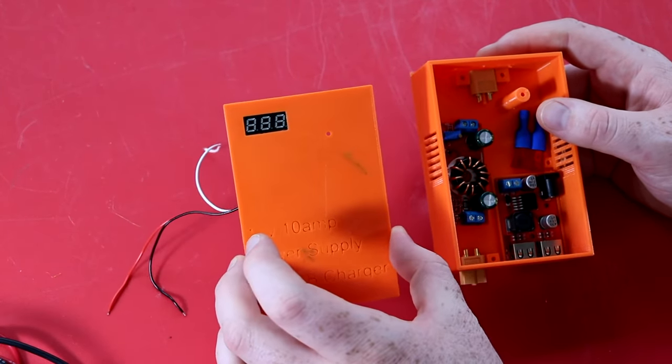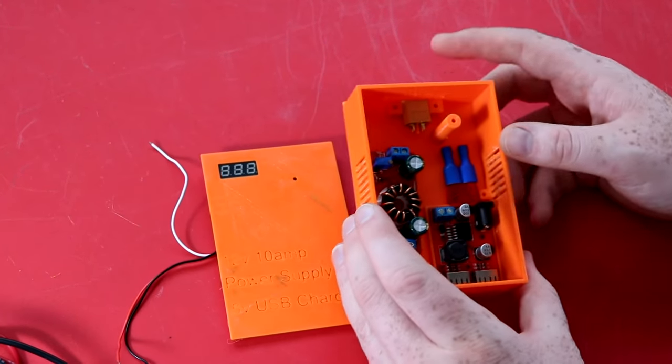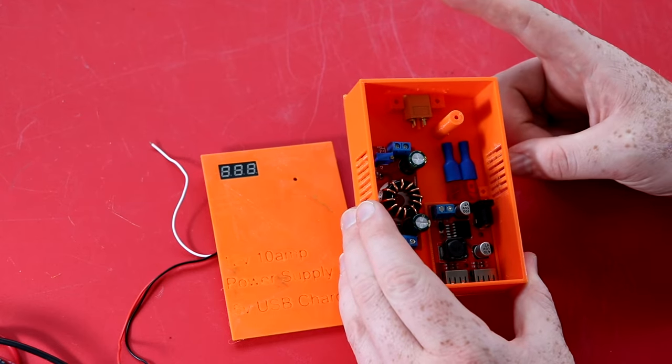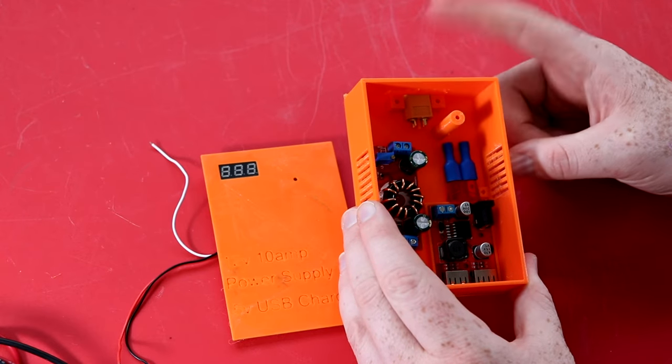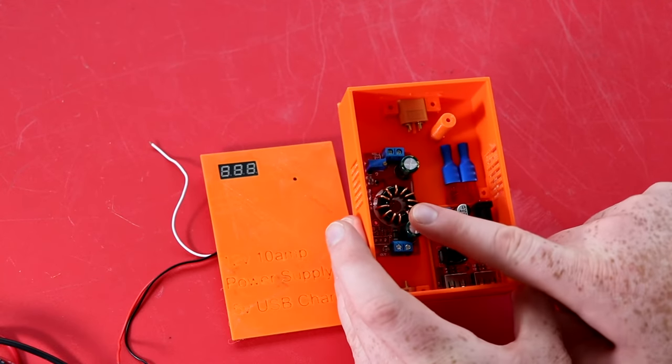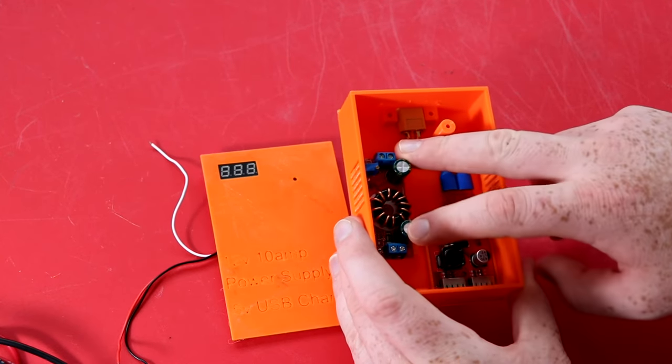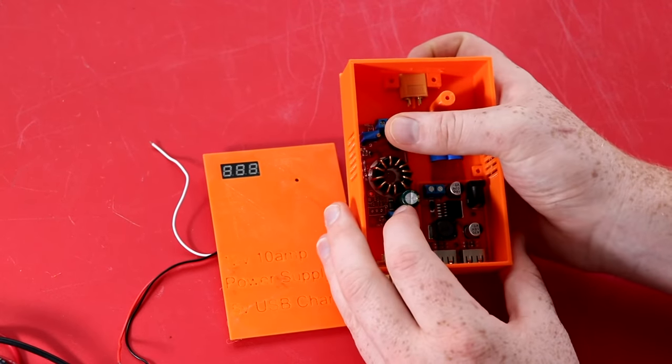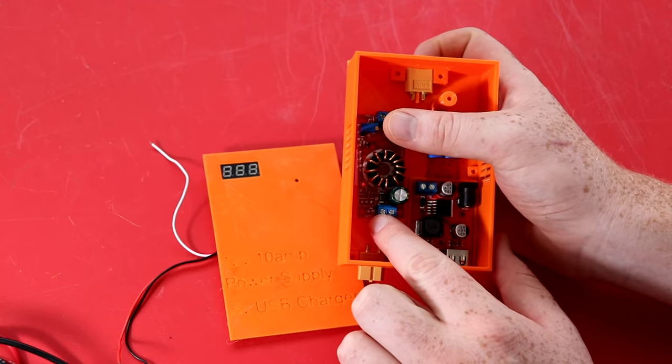So basically what this is going to do is I can input about anywhere from 13 volts to 30 volts into this. It's going to go into this voltage regulator right here and it's going to take that voltage and drop it down to 12 volts.